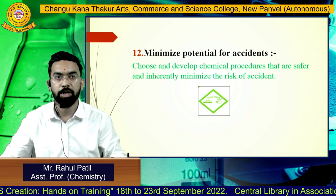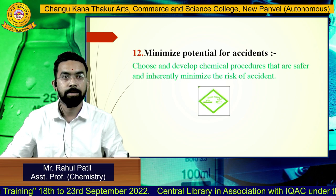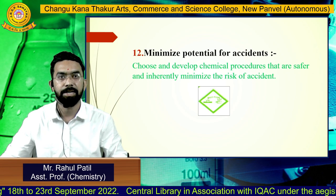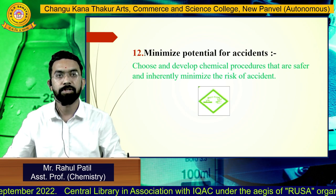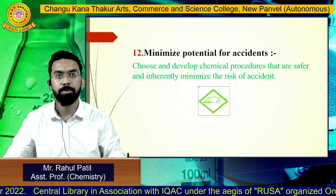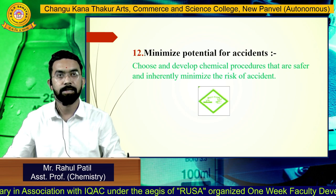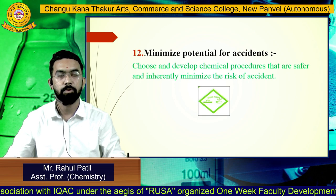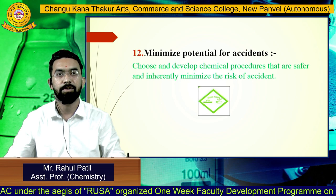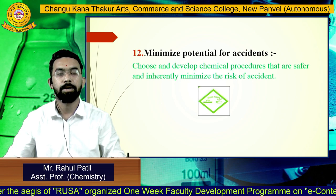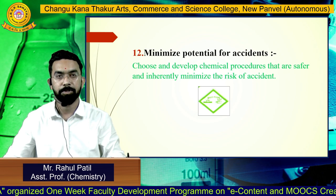Principle 12: Minimize Potential for Accidents. Choose and develop chemical procedures that are safer and inherently minimize the risk of accidents. According to Paul Anastas, the concept of Green Chemistry is to design and develop methods that, at the end of their function, will not affect the environment or human life. These are the 12 principles of Green Chemistry.